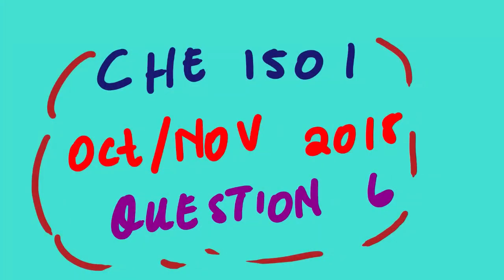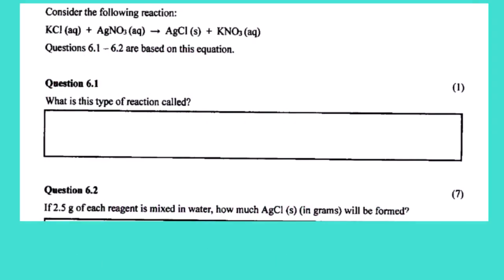Today's lesson we are going to look at Chemistry 1501. Our main focus for today will be the October/November 2018 question paper. We are going to look at question six. This is the actual question paper. The question says: consider the following reaction.